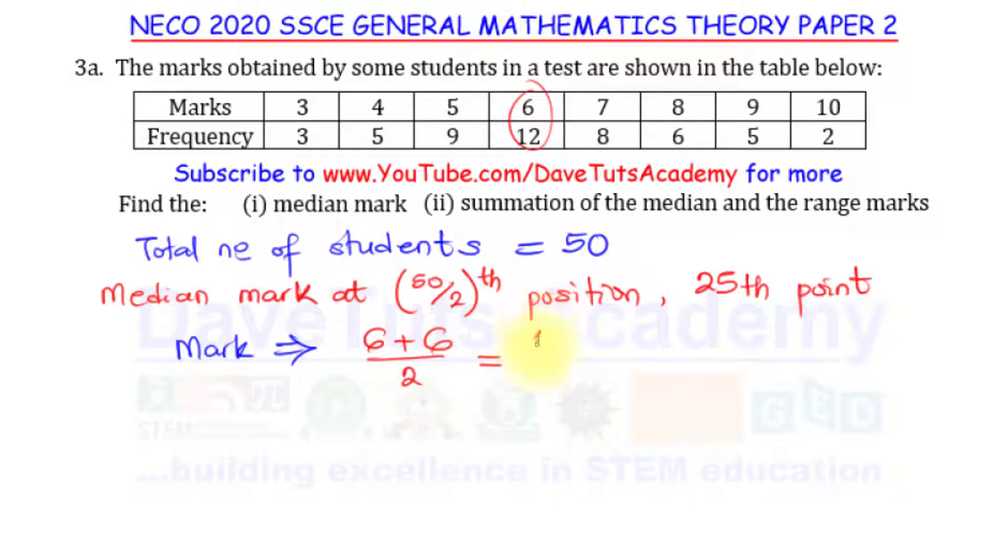Here it's quite interesting - we have 6 reflecting in both, so the median mark will definitely be 6. Had it been an interpolation between 6 and 7, we would add 6 and 7 then divide by 2 to get 6.5, but here it's good to go. The median mark is 6.